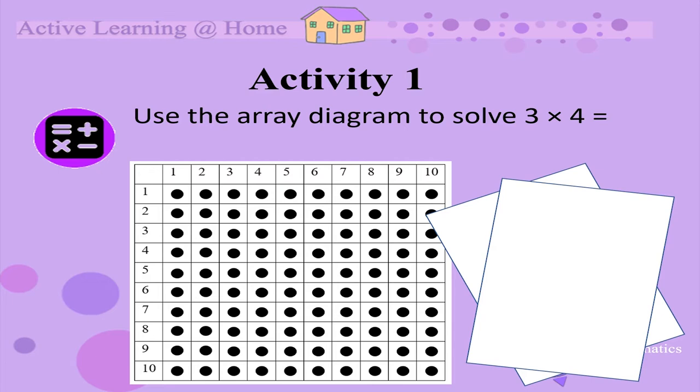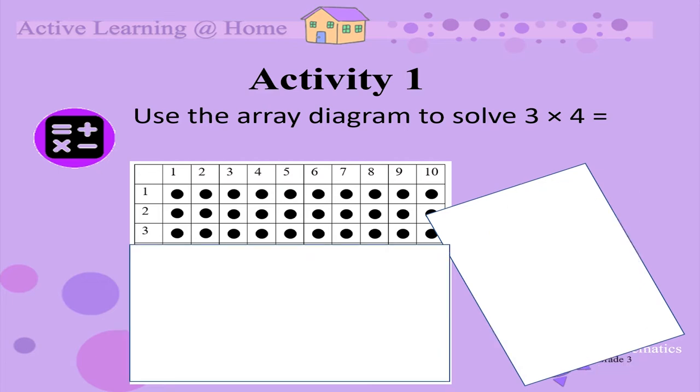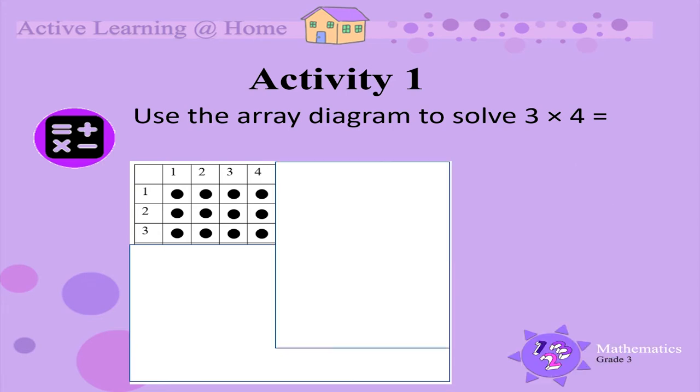Take one piece of paper and cover all the dots underneath the number 3 on the left. Take the other piece of paper and cover all the dots after the number 4 at the top. Now count the dots that you can see.